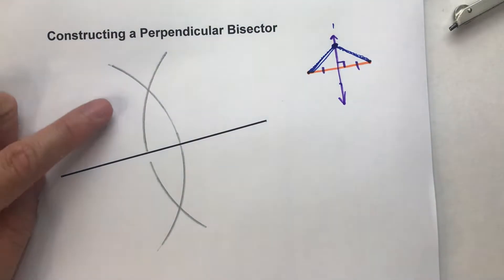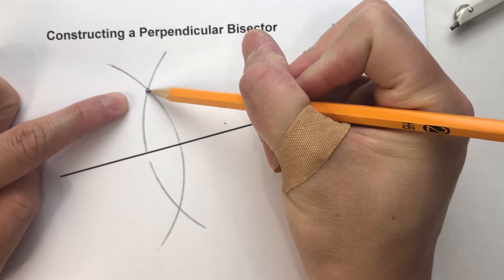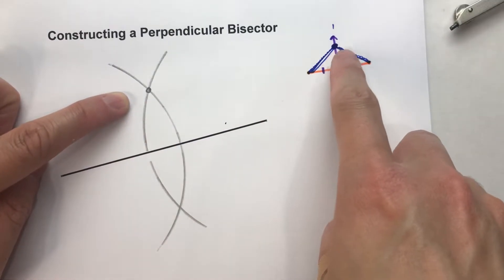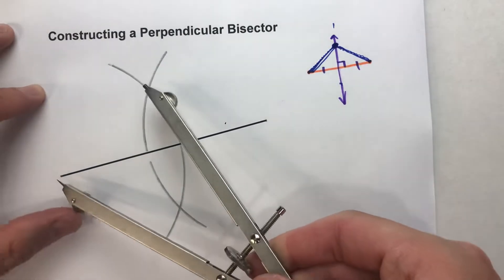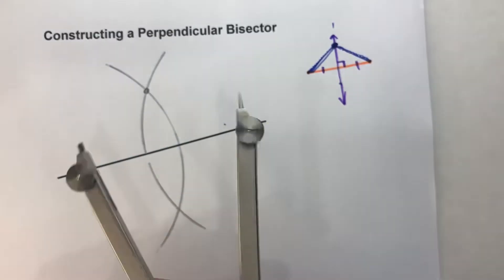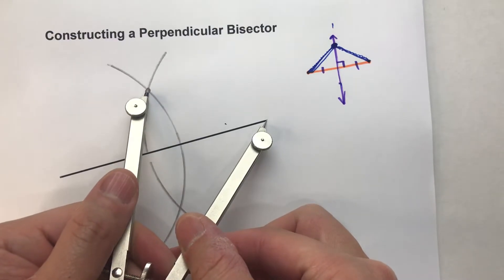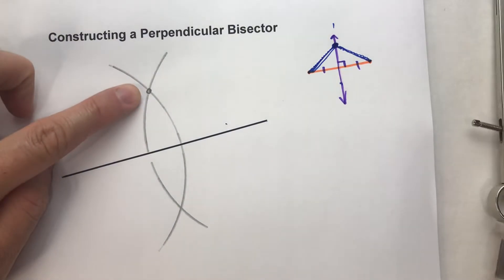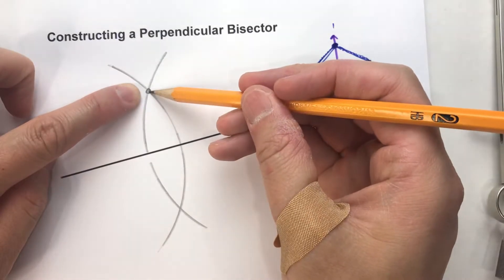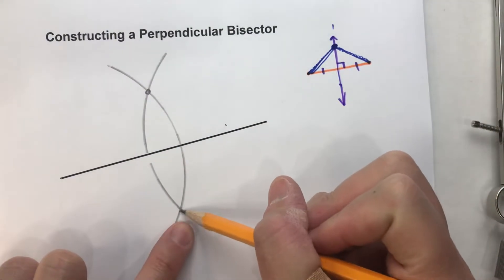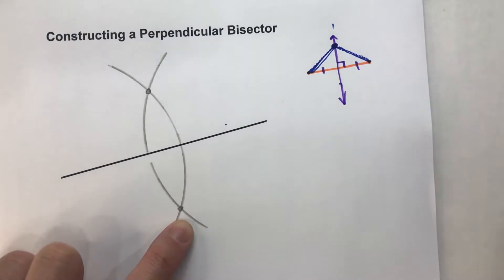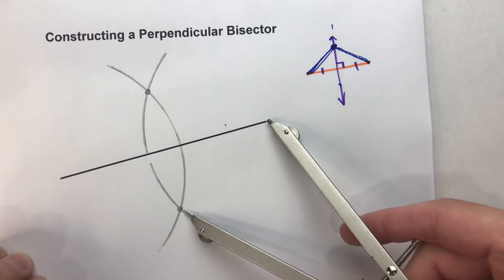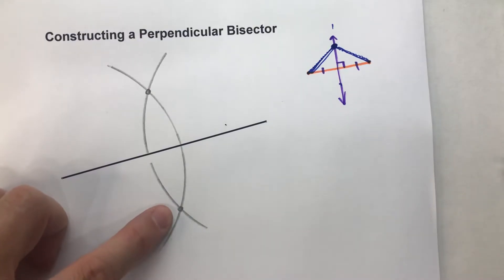And you'll notice the two arcs intersect at a point up here. Why is that point important? Because this point is the point we're looking for — it's the point that's equidistant from both ends of the line segment. See, that distance is the same as this distance. Therefore, that point's on the perpendicular bisector. Now, the reason why we swung an arc down below also is because this point right here, where the two arcs intersect, that's also equidistant from the ends of the line segment. Therefore, that point is also on the perpendicular bisector.